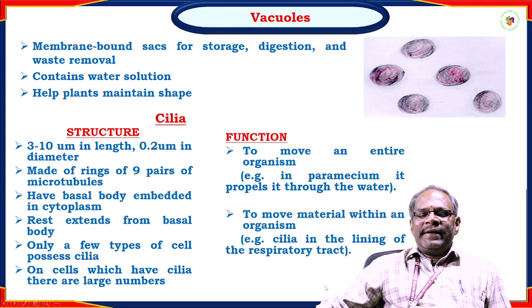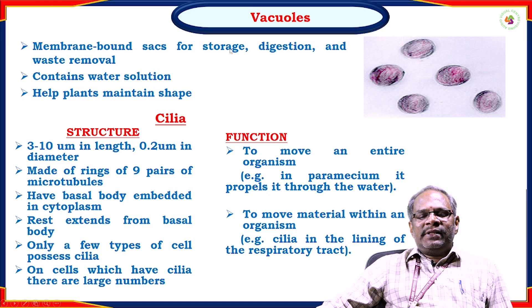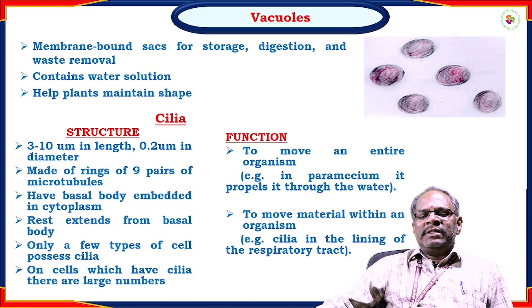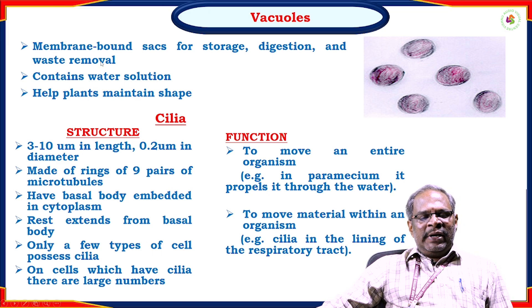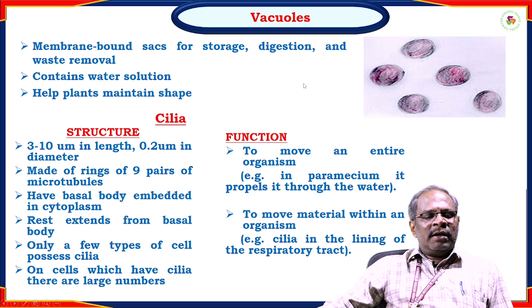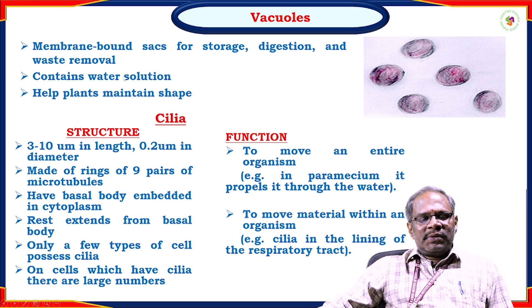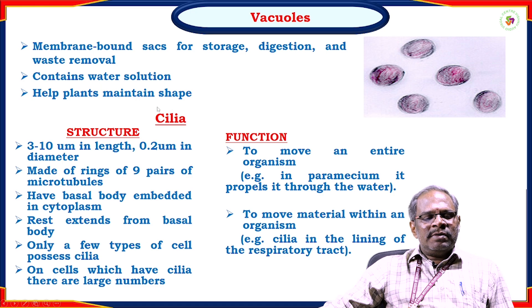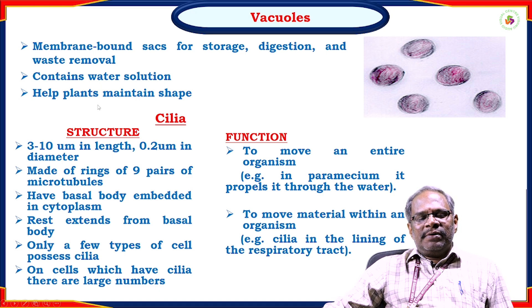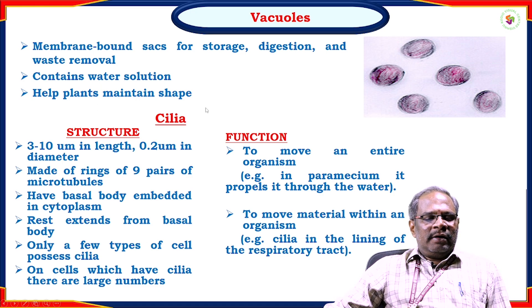Another organelle is vacuoles. Larger vacuoles are present in plant cells, and smaller vacuoles are present in animal cells. They are membrane-bound sacks for storage, digestion, and waste removal, containing a water solution. They help plants maintain their shape.